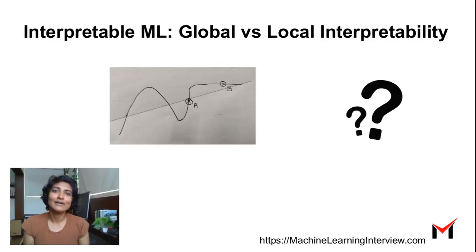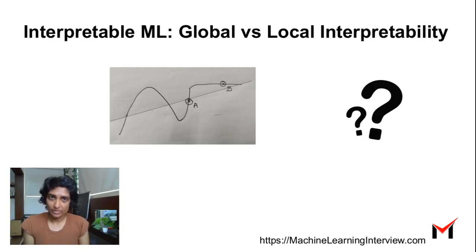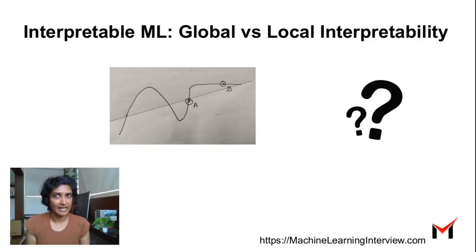Interpretable ML: global versus local interpretability. Often we build complex models to simulate real-world phenomena and make complex decisions. It's not only important to build accurate models, but it's very helpful to know why the model is giving a specific outcome. This is called interpretability of the model.